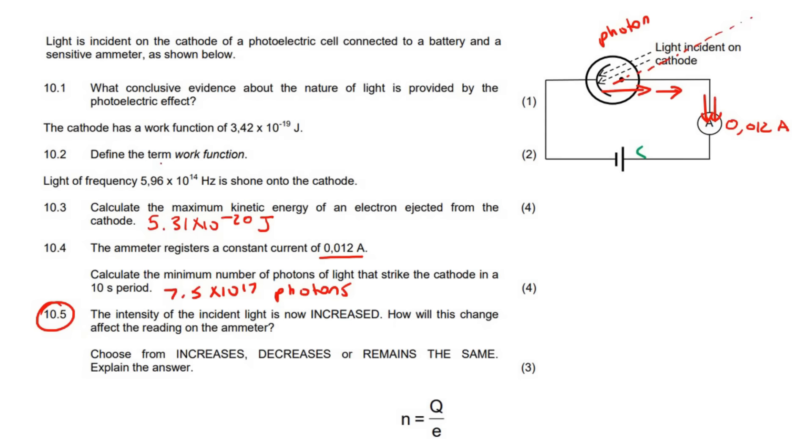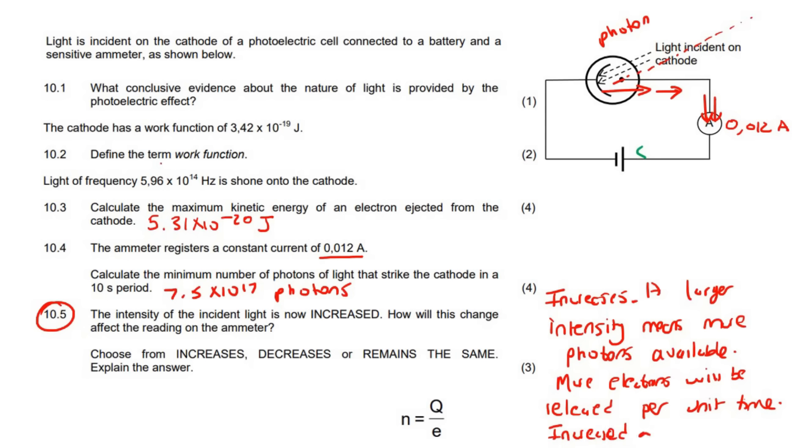It says, how will this change affect the ammeter? Choose from increases, decreases, or remains the same. We'll say increases. And then we can say, a larger intensity means more photons available. More electrons will be released per unit time. Increased ammeter reading.